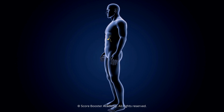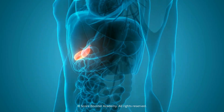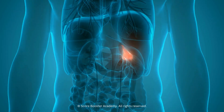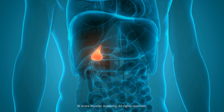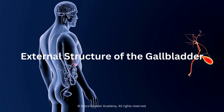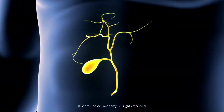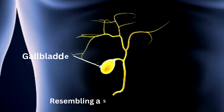The gallbladder has distinct external features that contribute to its function and positioning. The gallbladder is typically pear-shaped, resembling a small sack or pouch.